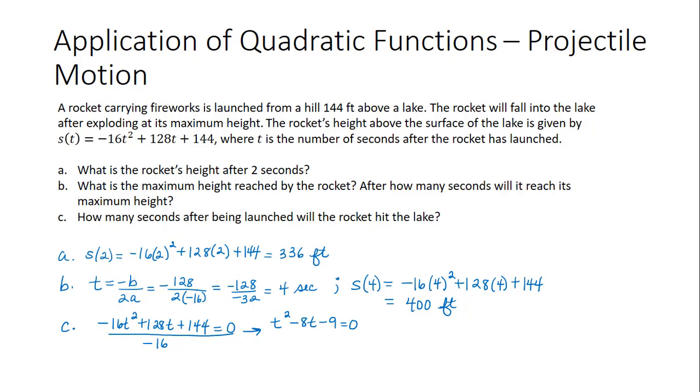And this equation is quadratic, and it does factor, because there are factors of 9 whose difference is 8. So that factors as t minus 9 times t plus 1, which is equal to zero, which gives us that either t is equal to 9, or t is equal to negative 1. And then negative 1 doesn't make sense in this context, so it's going to take 9 seconds for the rocket to come back down to the lake.